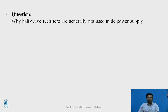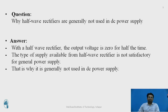Before proceeding, let me ask you one question: why are half wave rectifiers generally not used in a DC power supply? Let me give the answer. With the half wave rectifier, the output voltage is zero for half the period — during the negative half cycle, the output is zero. So the type of supply available from the half wave rectifier is not satisfactory for a general power supply, which is why it is not generally used as a DC power supply.